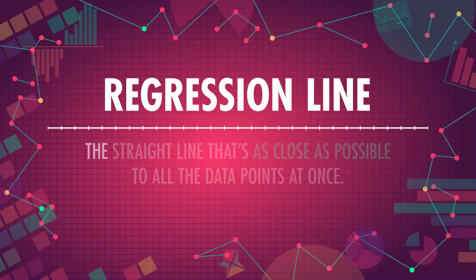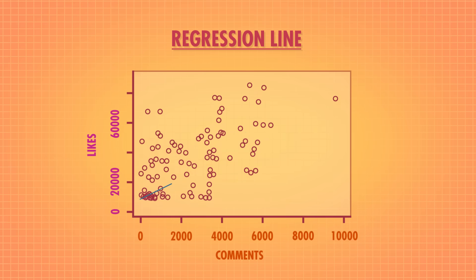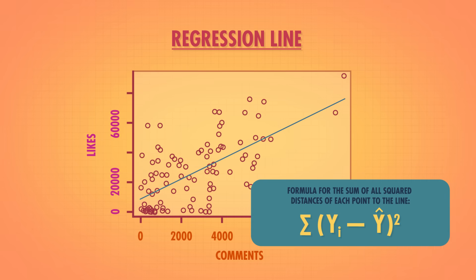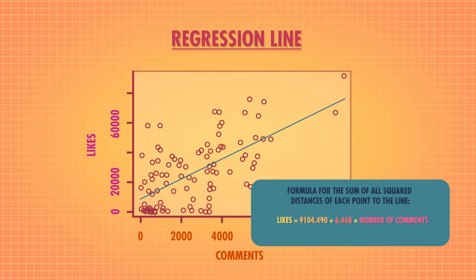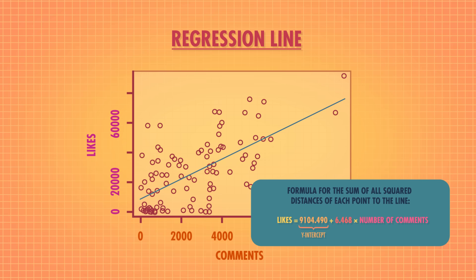One of the assumptions we make when using linear regression is that the relationship is linear. So if there's some other shape our data takes, we may want to look into other models. This plot looks linear, so we'll go ahead and fit our regression model. Usually a computer is going to do this part for us, but we want to show you how the line fits. A regression line is the straight line that's as close as possible to all the data points at once — it's the one straight line that minimizes the sum of the squared distance of each point to the line. The blue line is our regression line. Its equation looks like this. The y-intercept tells us how many likes we'd expect a trending video with zero comments to have.